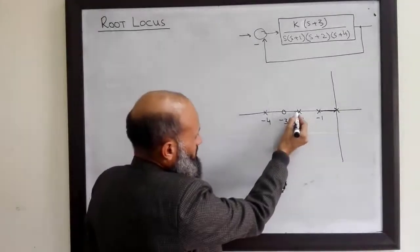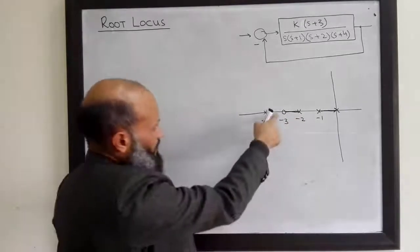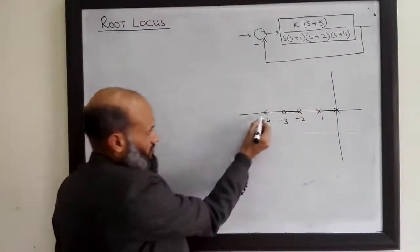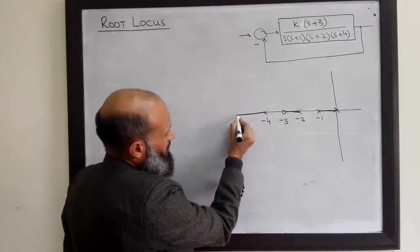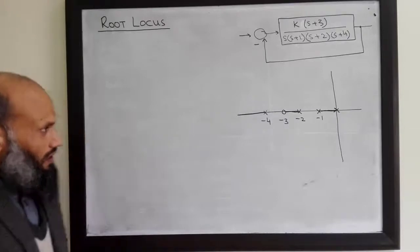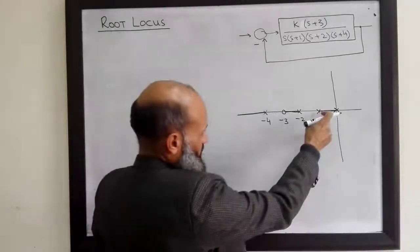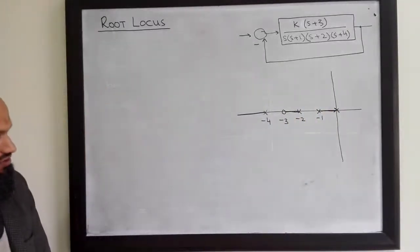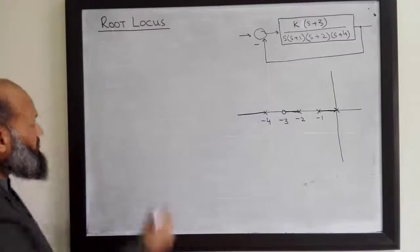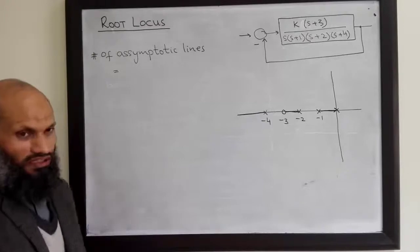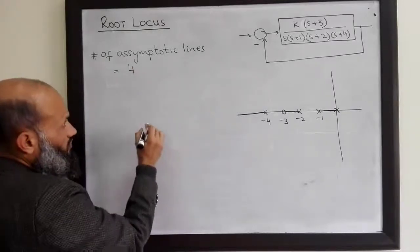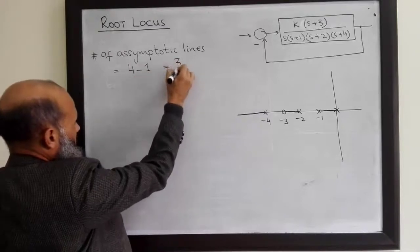We also know that root locus starts from poles and terminates at zeros, and in approaching the zeros it follows asymptotic lines. The number of asymptotic lines equals the number of finite poles minus the number of finite zeros. Here we have four finite poles and one finite zero, so there will be three asymptotic lines.